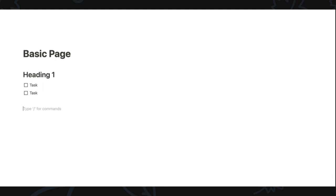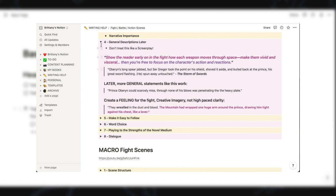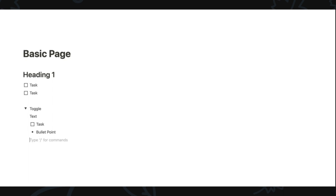One of my absolute favorite features is the toggle — just type 'toggle', add whatever header you want, click the arrow down and press enter to add text or a check mark. The check mark actually has a shortcut using two symbols. Another feature I use a lot is the bullet point, with the shortcut being a dash and a space. The wonderful thing about toggles is you can collapse and open them, so pages with a lot of content stay clean because you can condense all your sections. You can even create toggles within toggles.